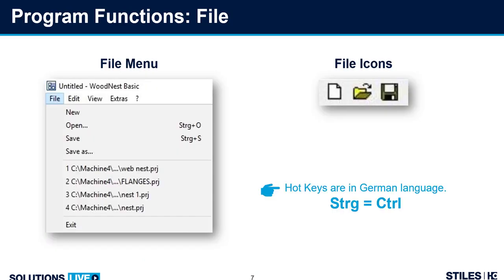Let's talk about the file function. Since it's Windows-based, hitting File gives us a drop-down menu. We can create a new part, open a part, save a part, save as, and it shows us the last four project files we had open. Notice the hotkeys — we're used to the standard Windows Ctrl+O for open and Ctrl+S for save, but this program still has German hotkeys. STRG is their equivalent of our Control. So all the hotkeys still work: Ctrl+O, Ctrl+S. We also have icons along the top to start a new board, open a panel, and save a panel.